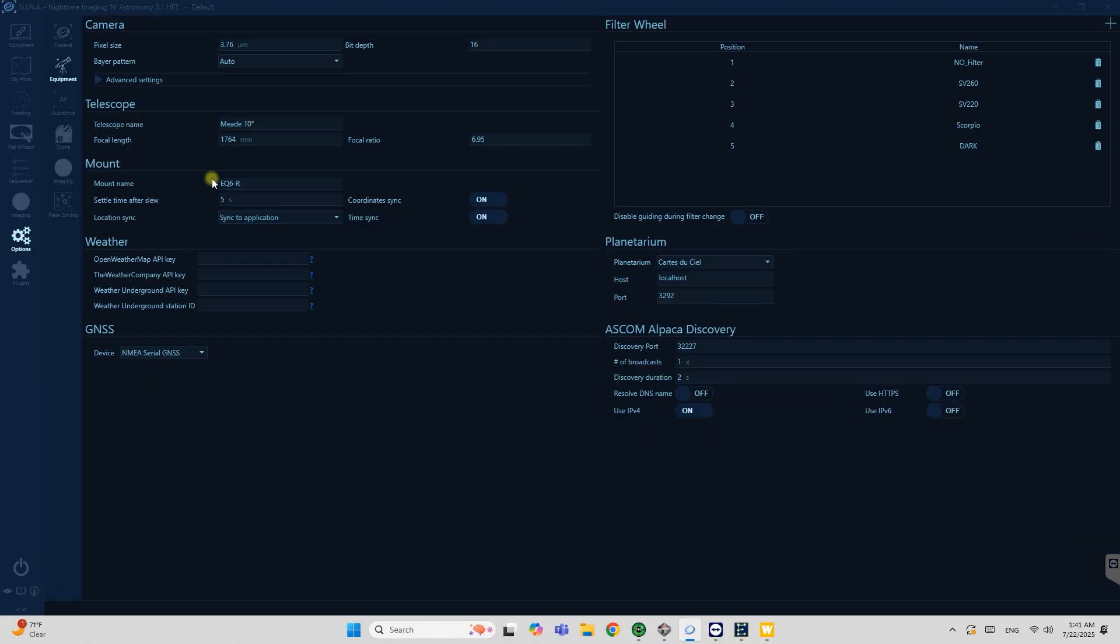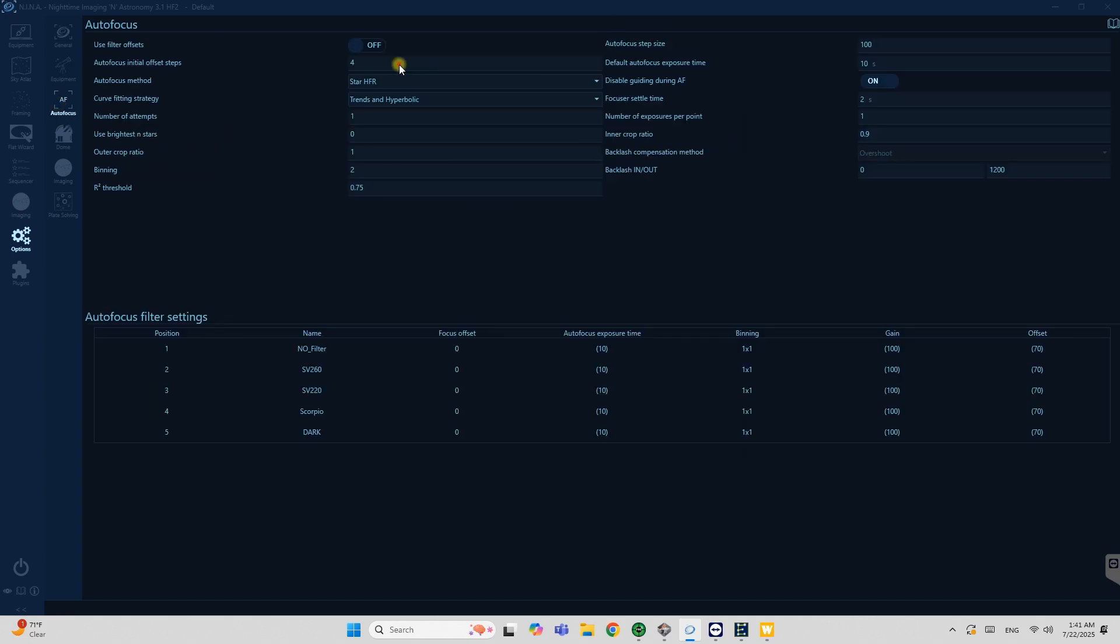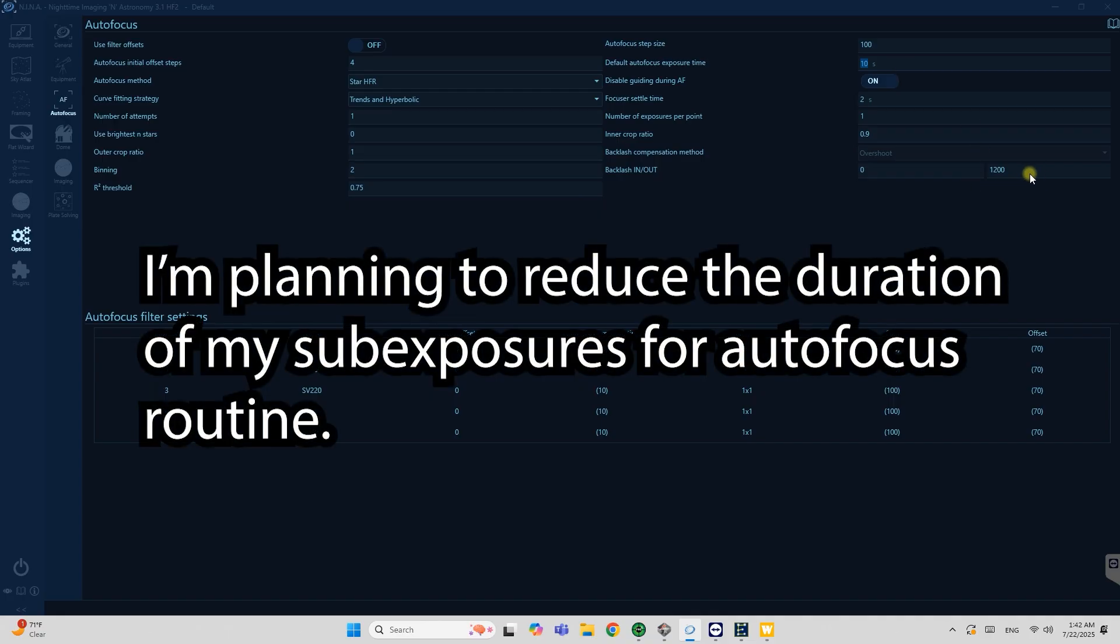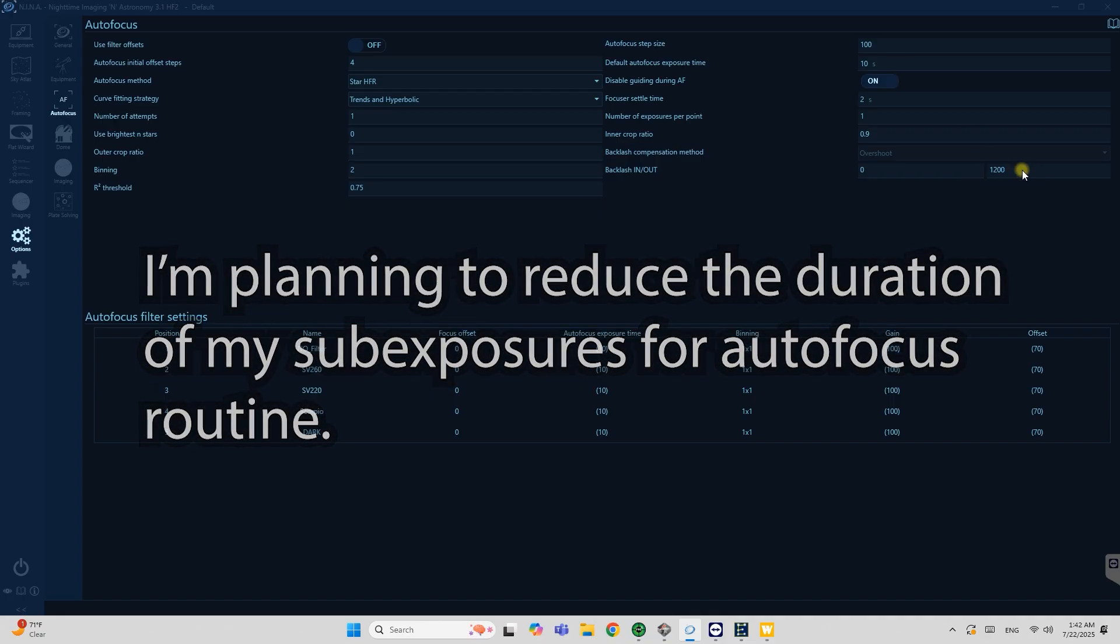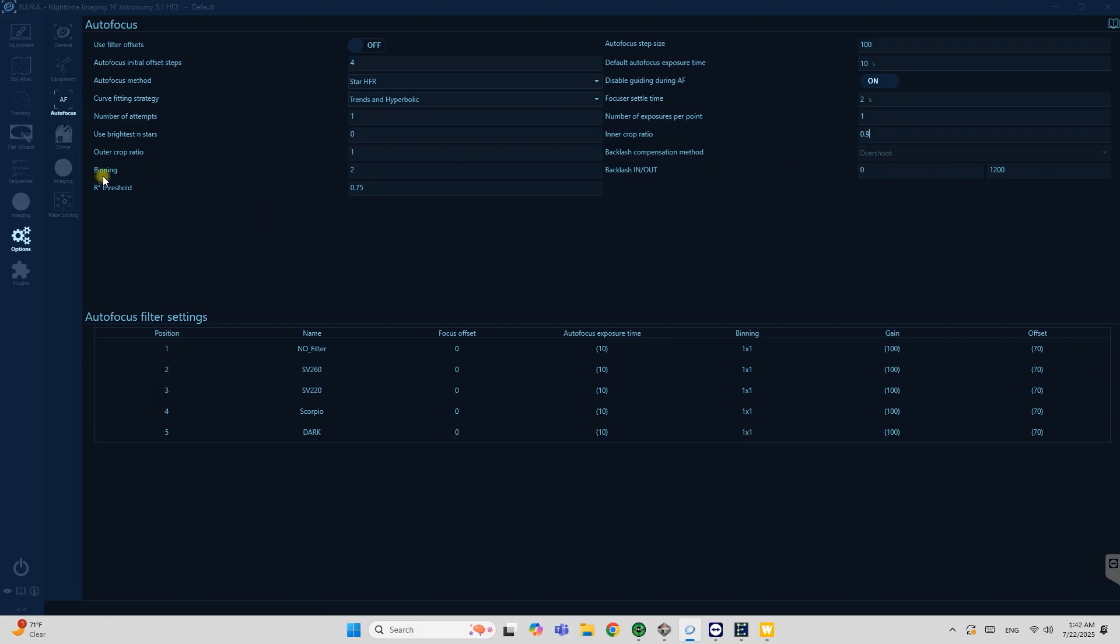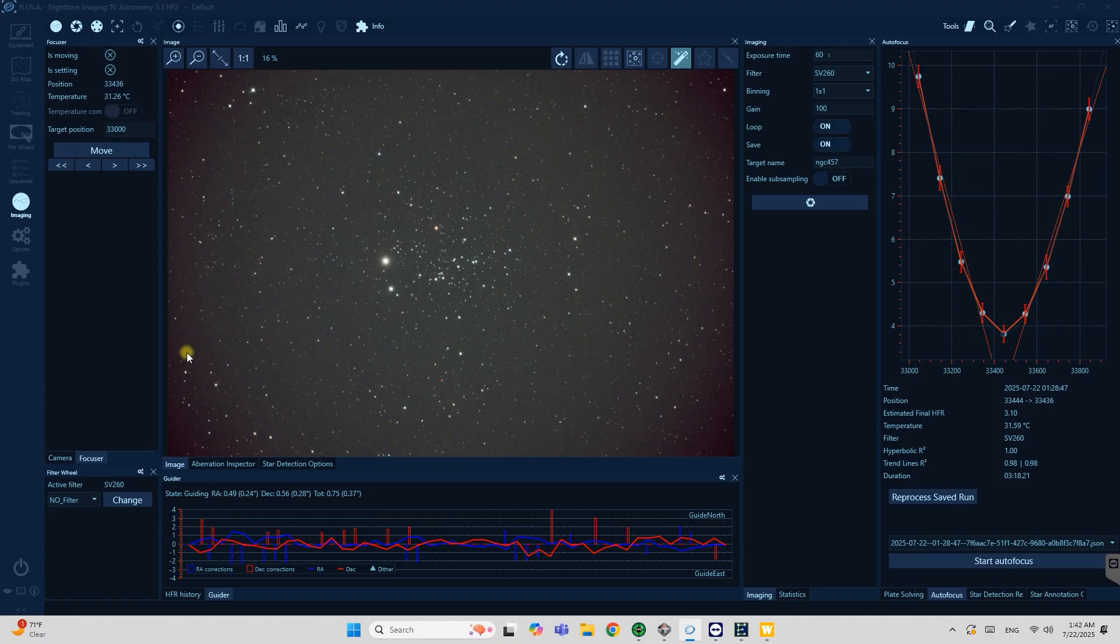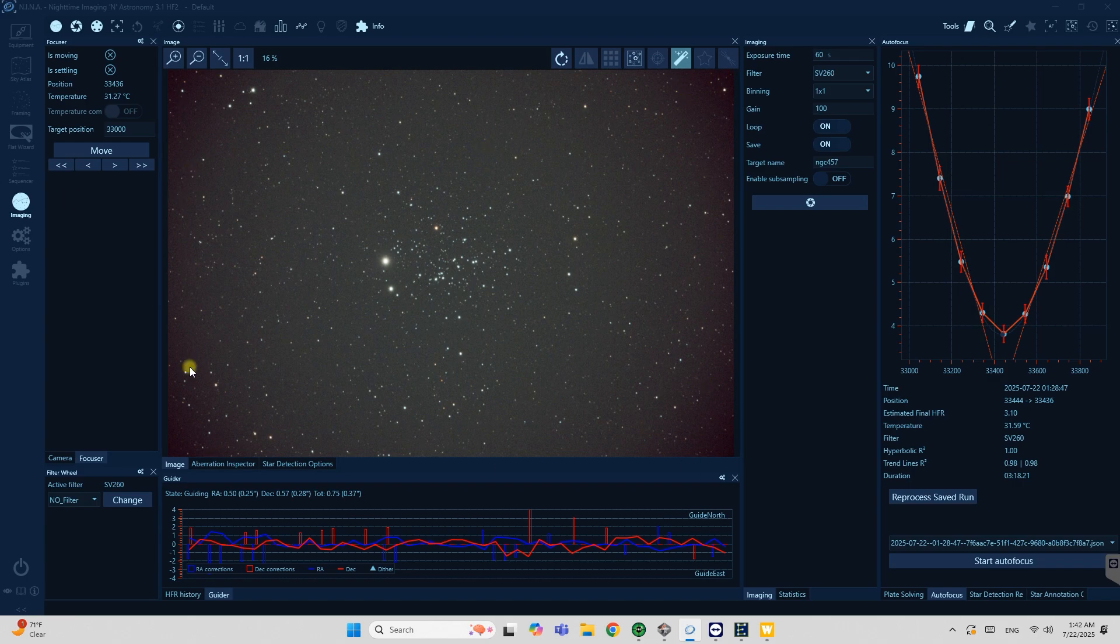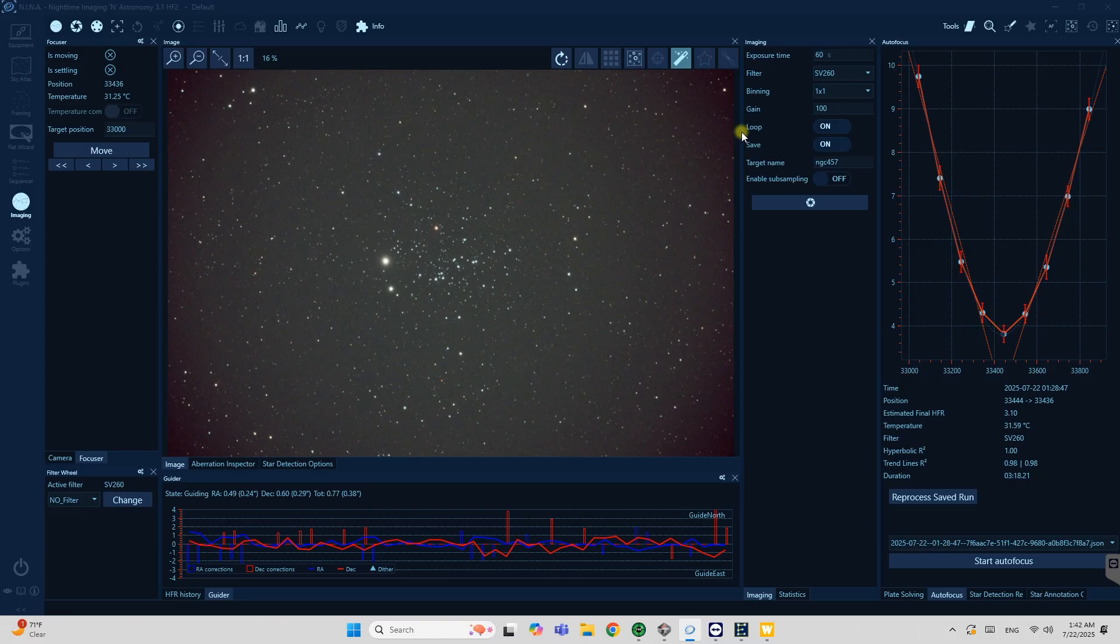And for those that are interested guys, if you want to possibly try the settings that I use on autofocuser: I have four initial offset steps, this is my threshold, I use binning 2x2, my autofocus step size is 100 steps, the exposure time is 10 seconds, and I have a really huge out backlash set at 1200. I also use a crop ratio of 0.9 which basically crops out the outer area of this rectangle and doesn't count whatever the stars are there, just because it's the vignetting part. I just decided to do it and as you can see I'm getting pretty good results. So yeah this is kind of what I wanted to show you guys.